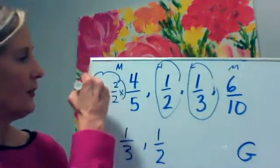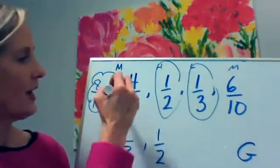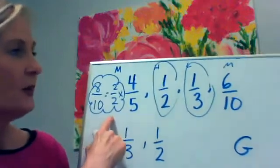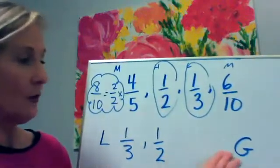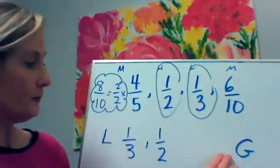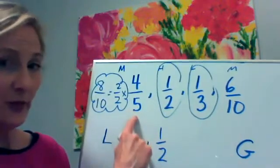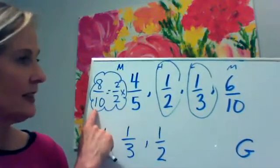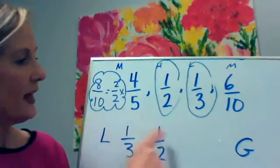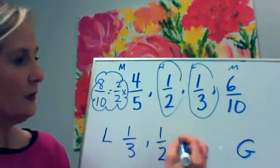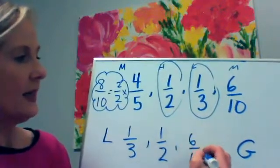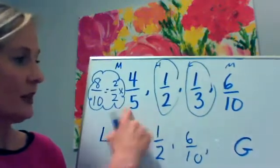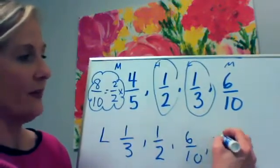Here's a tricky part: when I go to put them in order, I need to be sure I use the original fraction, not the equivalent fraction. So the next largest would be six tenths, and the largest or greatest of all is going to be four fifths.